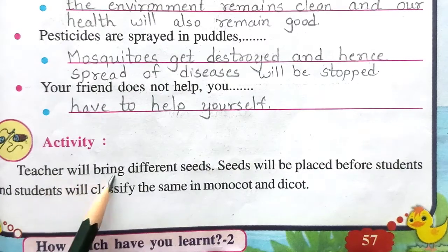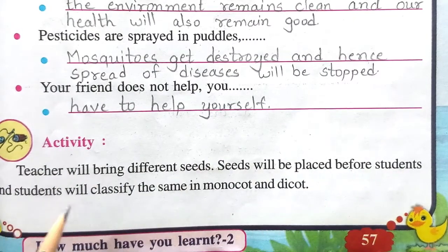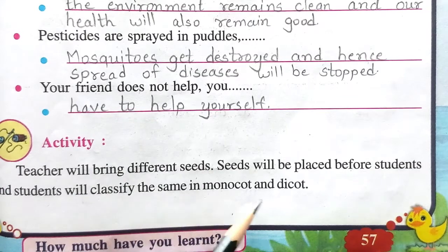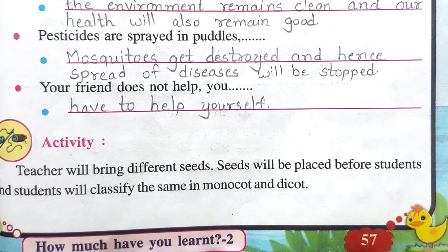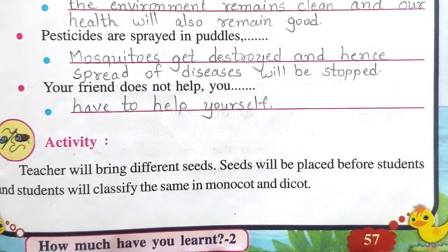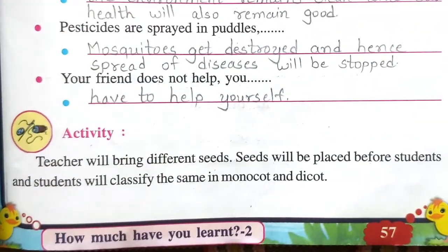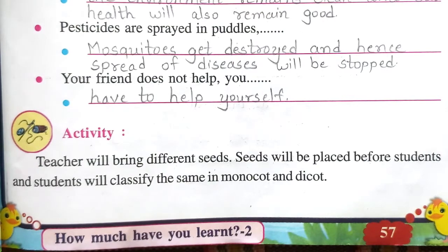Activity: the teacher will bring different seeds. Seeds will be placed before students and students will classify them into monocot and dicot. You have to write some names of monocot and dicot seeds in your notebook.